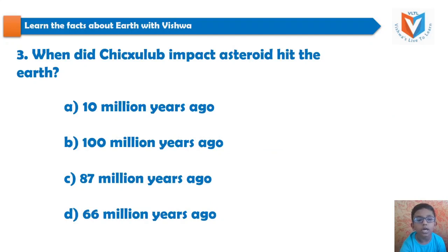Third question: When did the Chicxulub impact asteroid hit the Earth? The options are: 10 million years ago, 100 million years ago, 87 million years ago, or 66 million years ago.